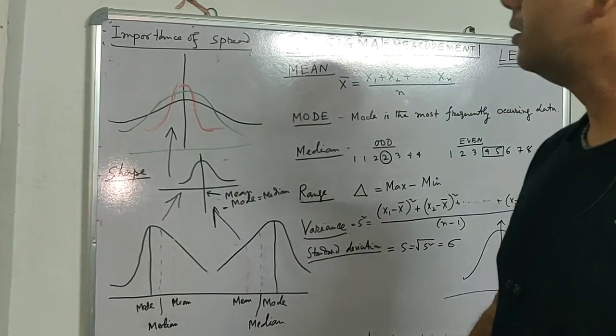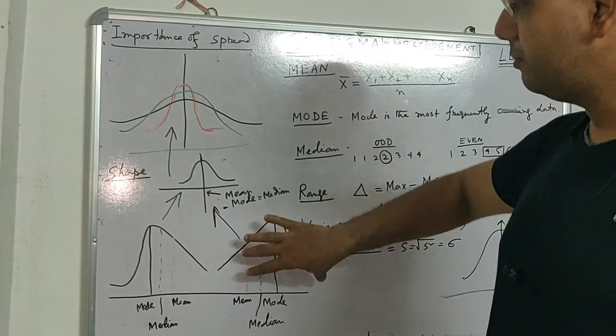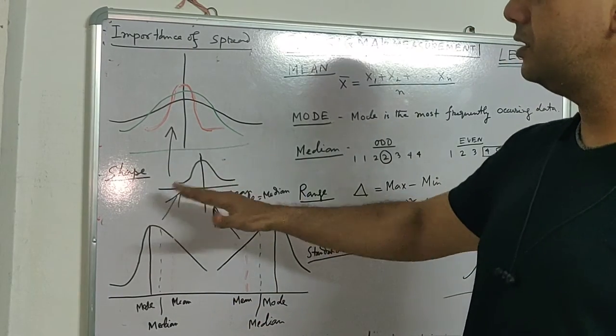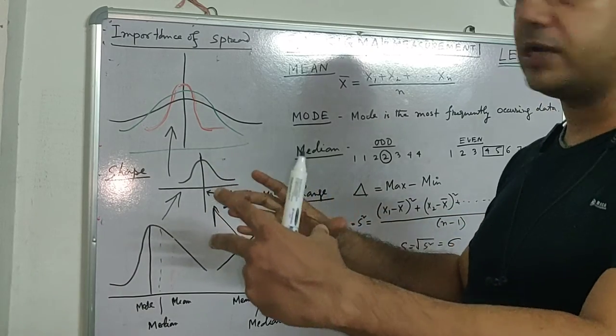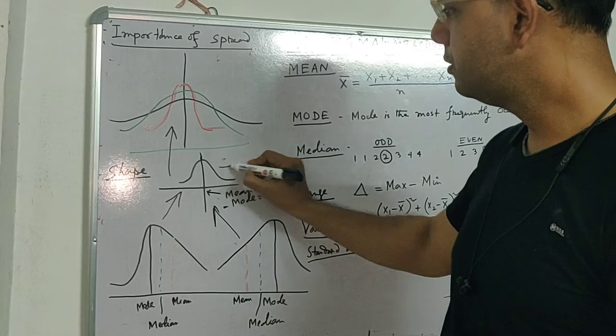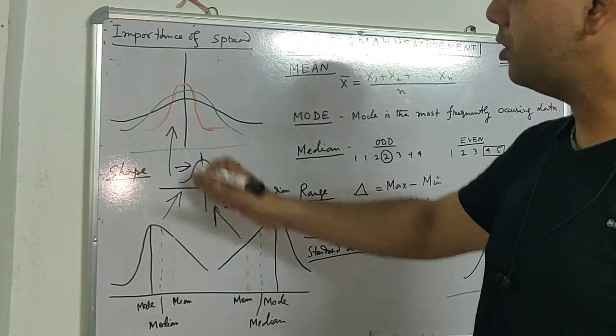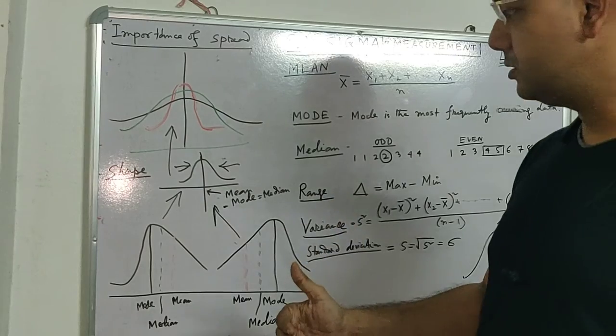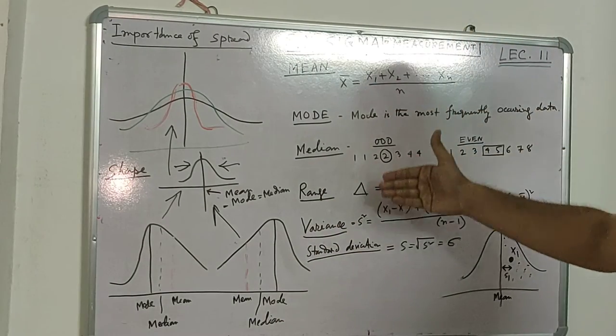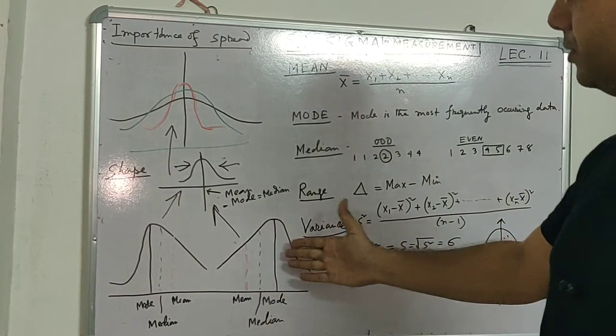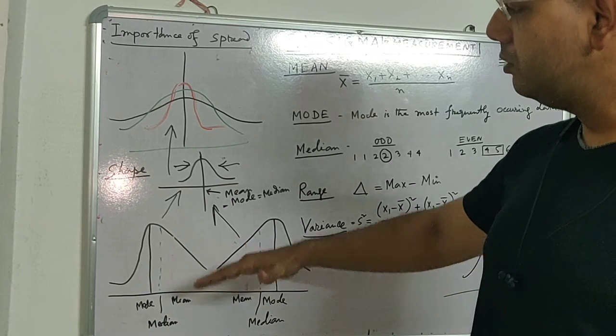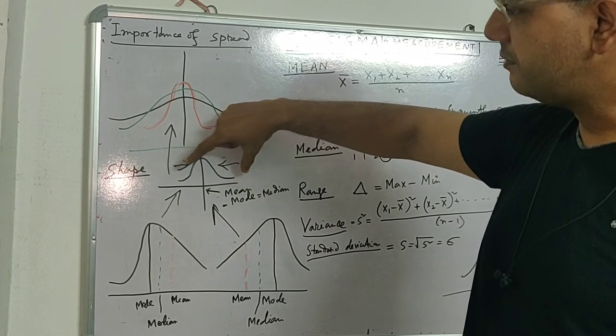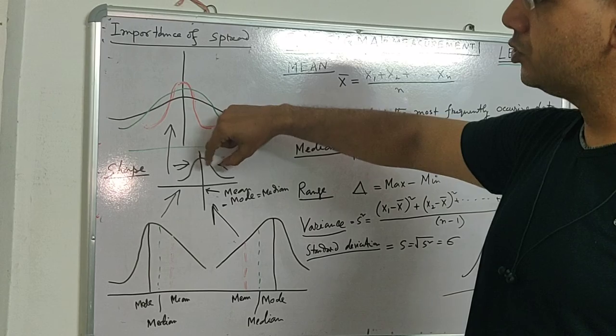First, our Six Sigma journey is to reshape the data or process to a normal distribution, evenly distributed. In between, it may be a spread one. Finally, this has to be squeezed so that all data points are along the target line. Our natural progression is collection of data, measurement—we will define how my shape is, then progress to a normal shape.